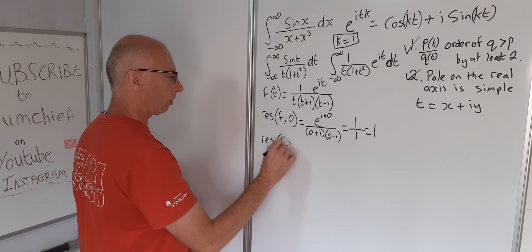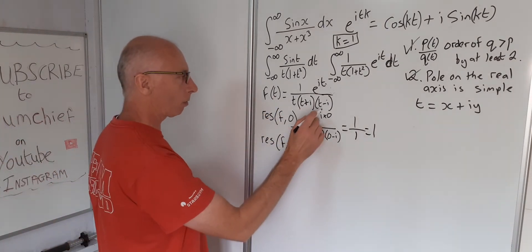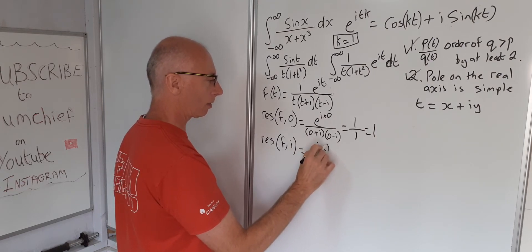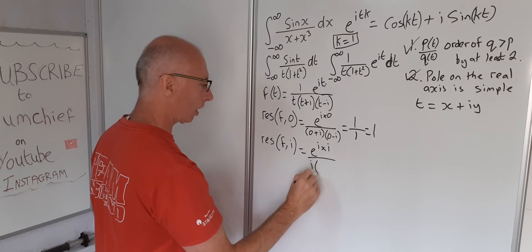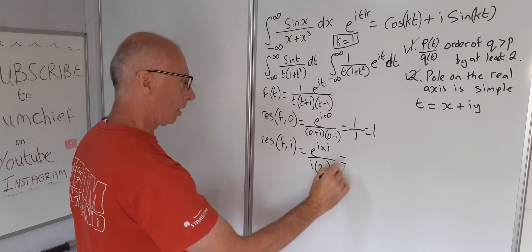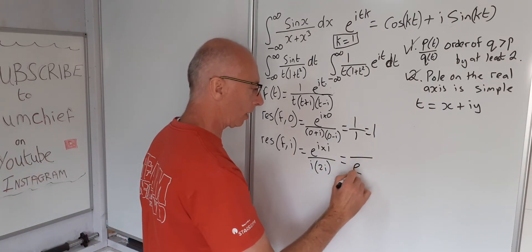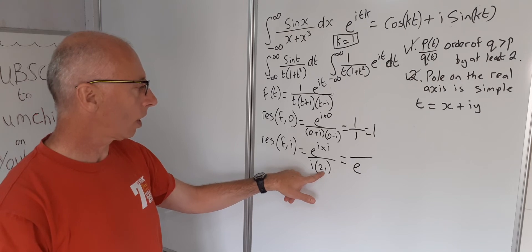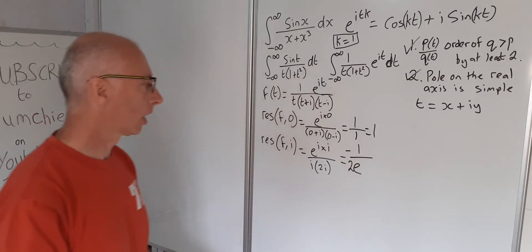The residue at t equals i: plug in i and cover the (t-i) factor. We get e^(i·i) over i·(i+i) = e^(i²) over i·(2i) = e^(-1) over 2i² = e^(-1) over (-2). So the residue at i equals minus one over two e, i.e., -1/(2e).